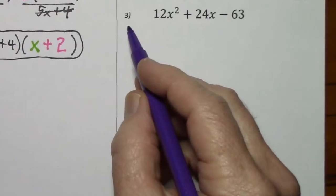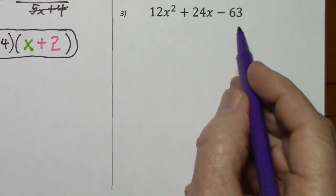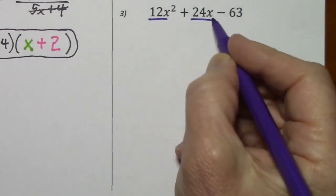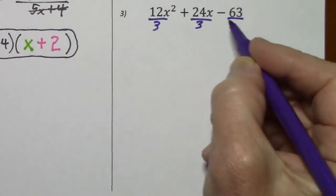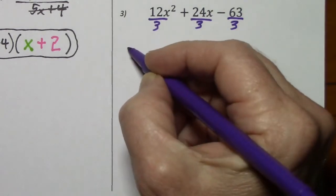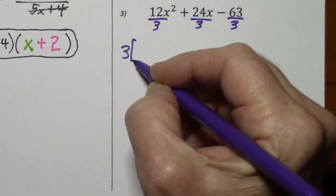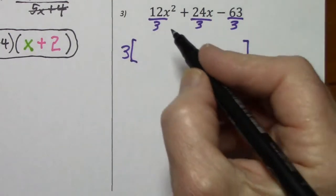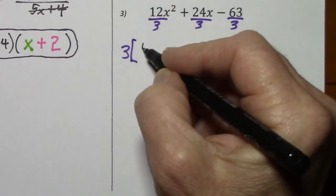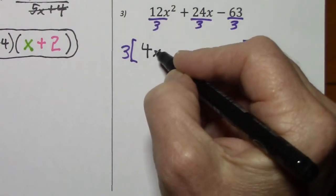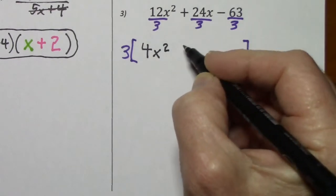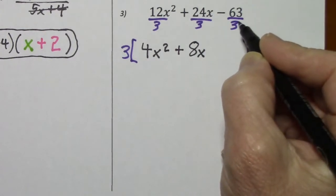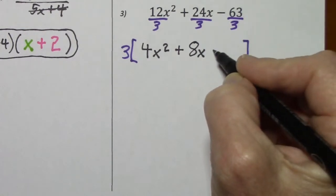Looking at number 3: number 1 on the list is, do we have a GCF? Yes — we can factor a 3 out of each term. If we factor it out, we write it in front of parentheses — in this case, I'll use brackets. So for the first term we'll end up with 4x squared, for this term positive 8x, and for this term negative 21.